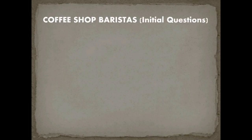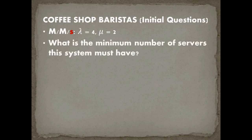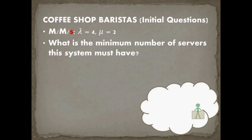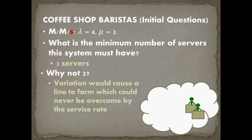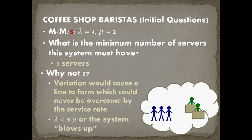So what are our initial questions? For this MMS system with lambda equals 4 and mu equals 2, what is the minimum number of servers the system must have? The answer is 3 servers. Why not 2 servers? Well, with two servers, variation would cause a line to form, and this line would never be overcome by the service rate because the service rate and arrival rate are exactly equal. Lambda must be less than s times mu, the effective service rate, or the system blows up.